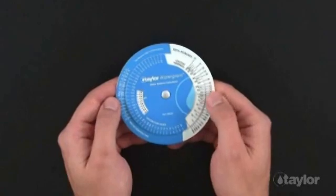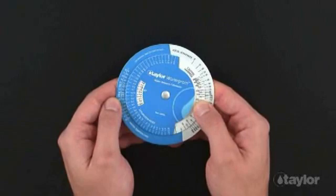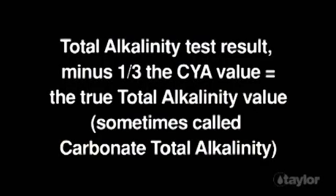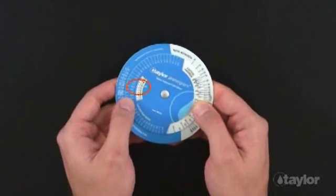Set the calcium hardness value of 300 opposite the total alkalinity value of 90 on the Watergram. Note, if the cyanuric acid (CYA) level exceeds 30 parts per million, the total alkalinity value must be adjusted using the following formula. Hold the calcium hardness and total alkalinity values where they are and turn the wheel until the arrow points to a pH value of 7.5 in the window.